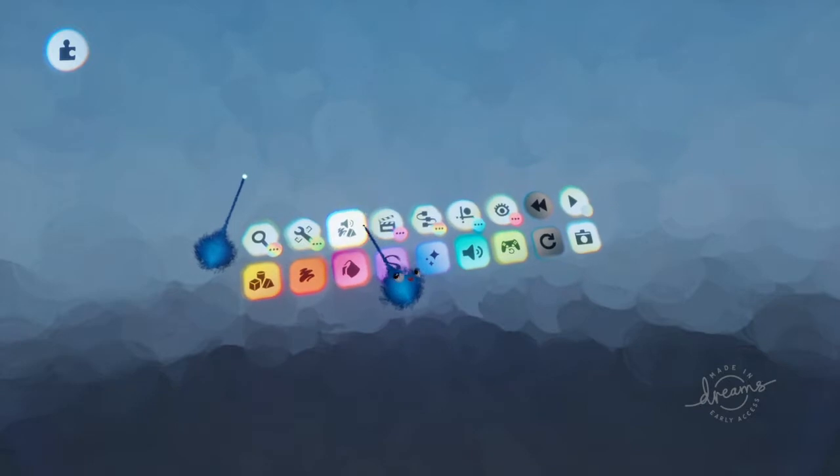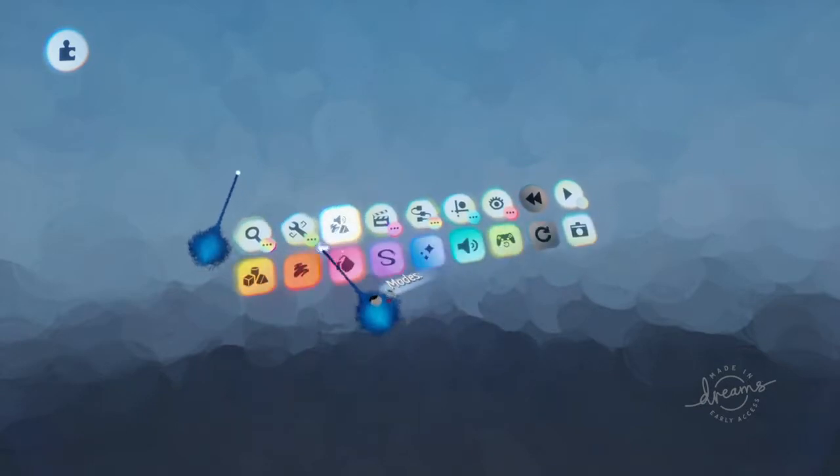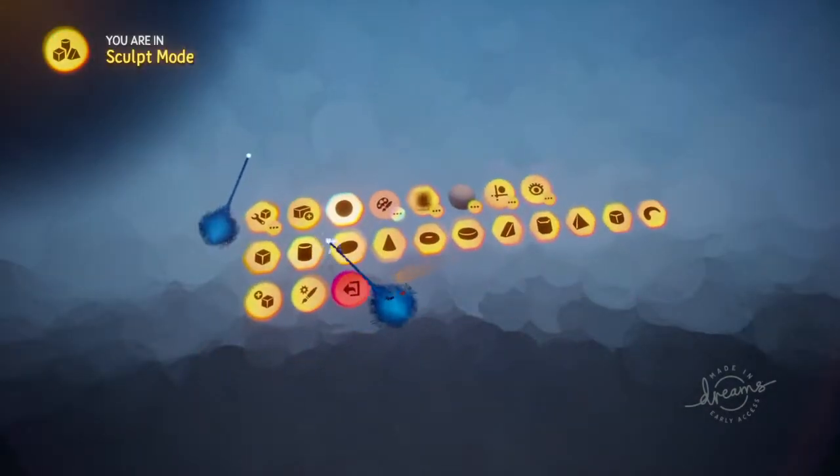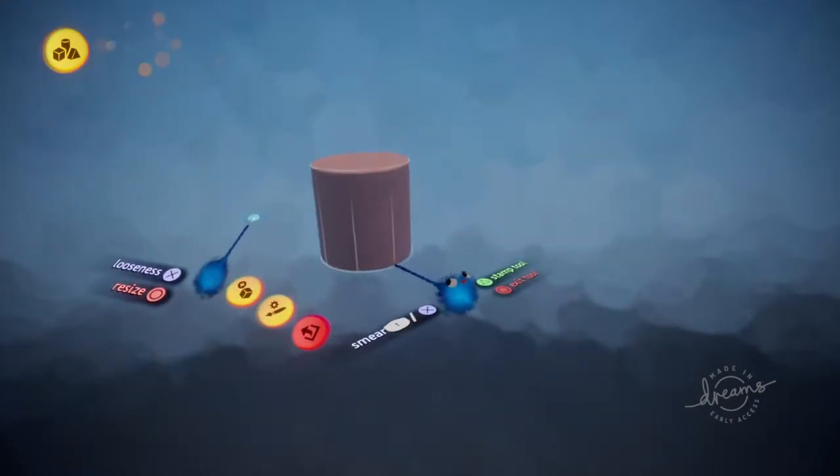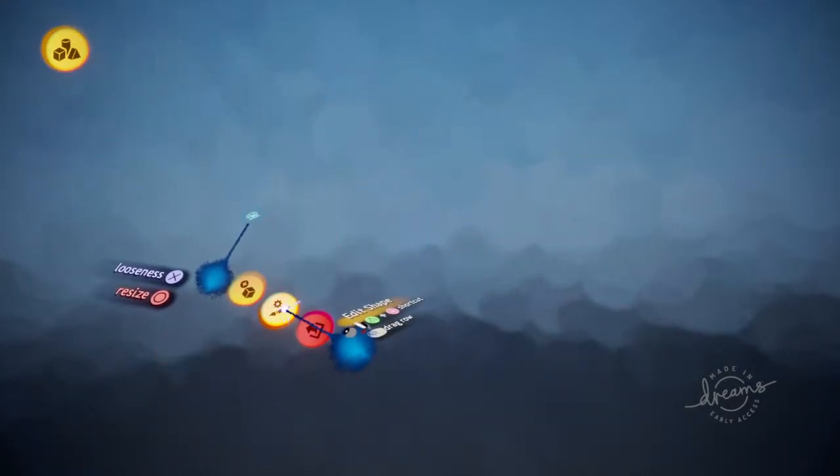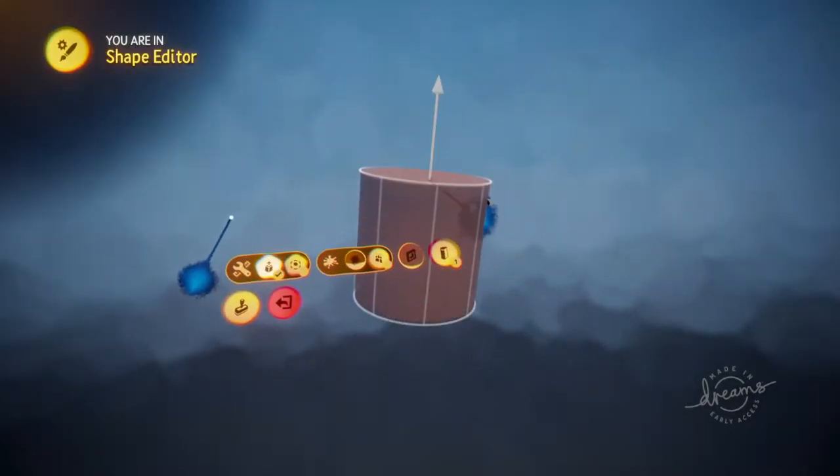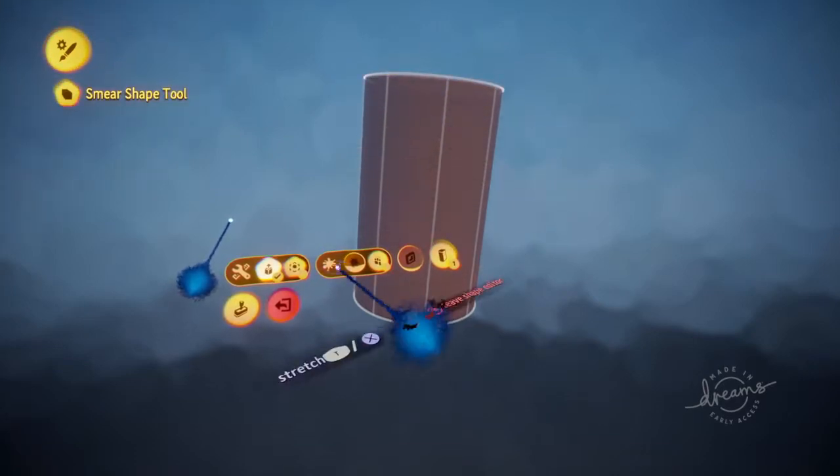We're going to start off by selecting a shape. You want to go with a cylinder and go over to exit edit the shape. We will make that a little bit longer.